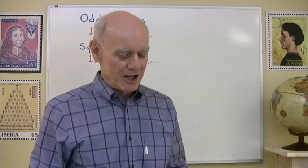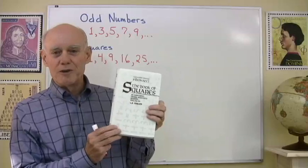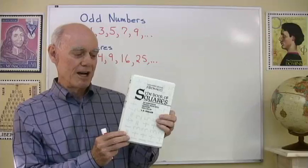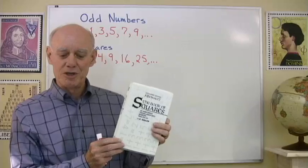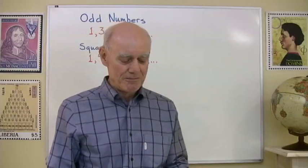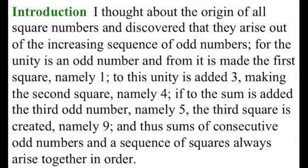So later on then, a couple days later, I'll come into class and say, look, I found the book here, The Book of Squares by the mathematician Fibonacci, and in the first paragraph in the introduction to his book, he shows the relationship between the sequence of odd numbers and the sequence of squares. Let me read it to you.